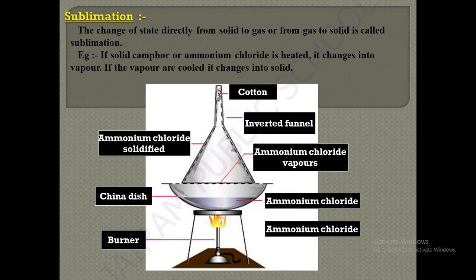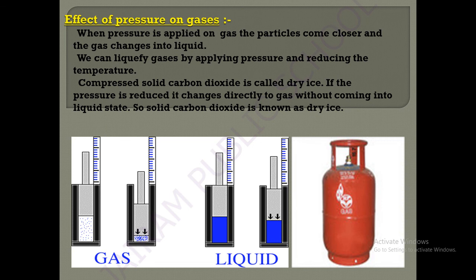Next, the effect of pressure on gases. If you apply pressure on gases, they are converted into a liquid state. When pressure is applied, the particles come closer and closer, and the gas changes into a liquid state. This principle is applied in liquefied petroleum gas — LPG cylinders used in domestic kitchens.